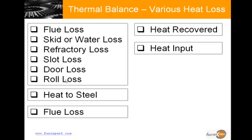The next is the heat that is utilized. The heat that is utilized is actually heat to the steel. Next, the heat that is lost. The heat that is lost is the flue loss that goes through the flue. Then comes the heat that is recovered. The heat that is recovered goes into heating the air for combustion. And finally, the total heat that is required to heat the furnace which is the gross or net heat input.